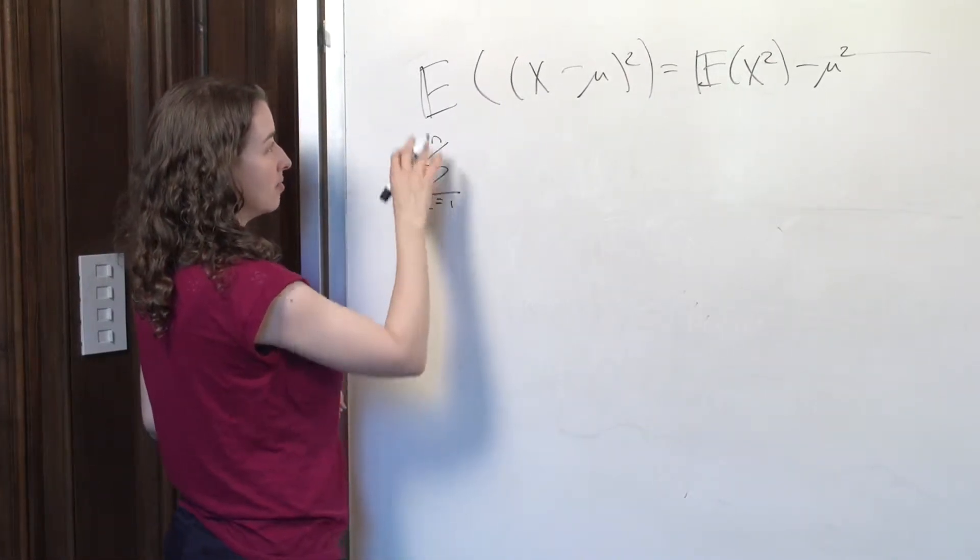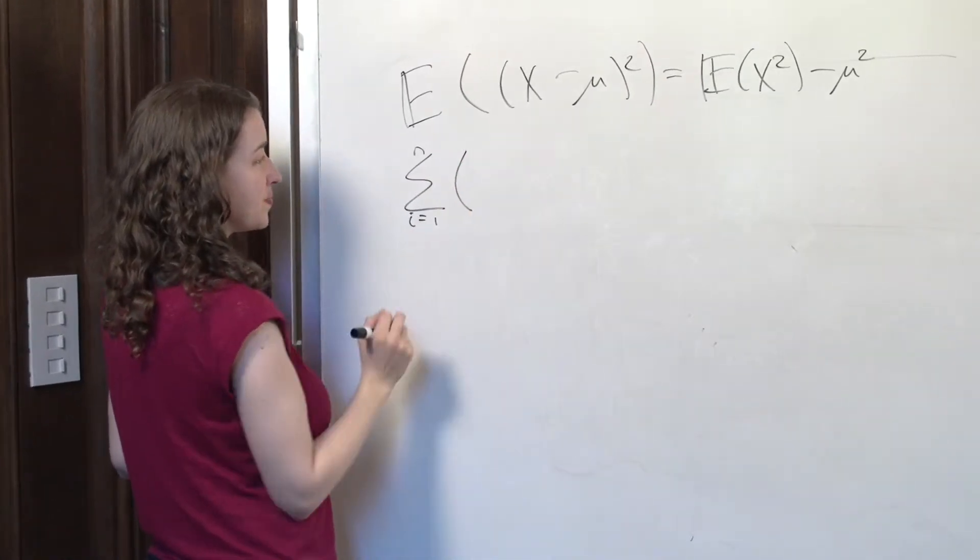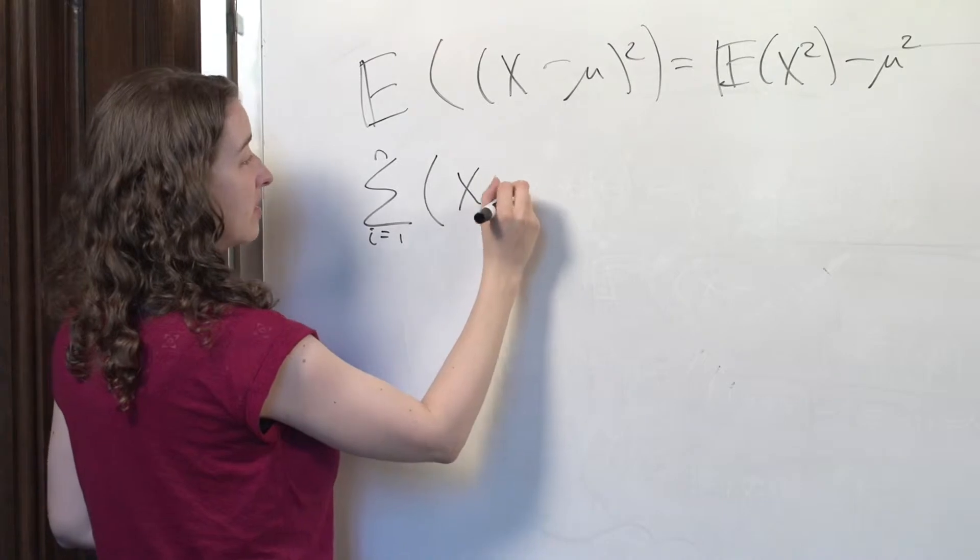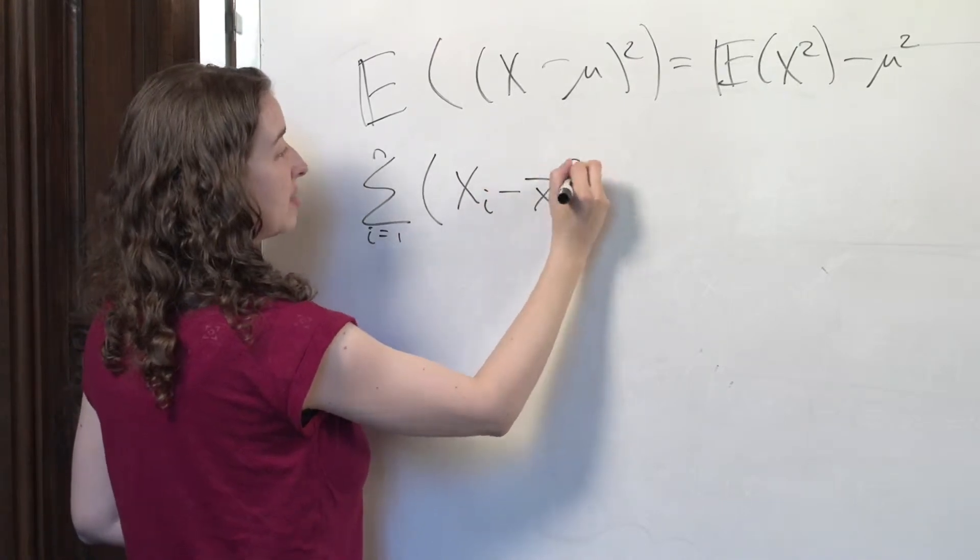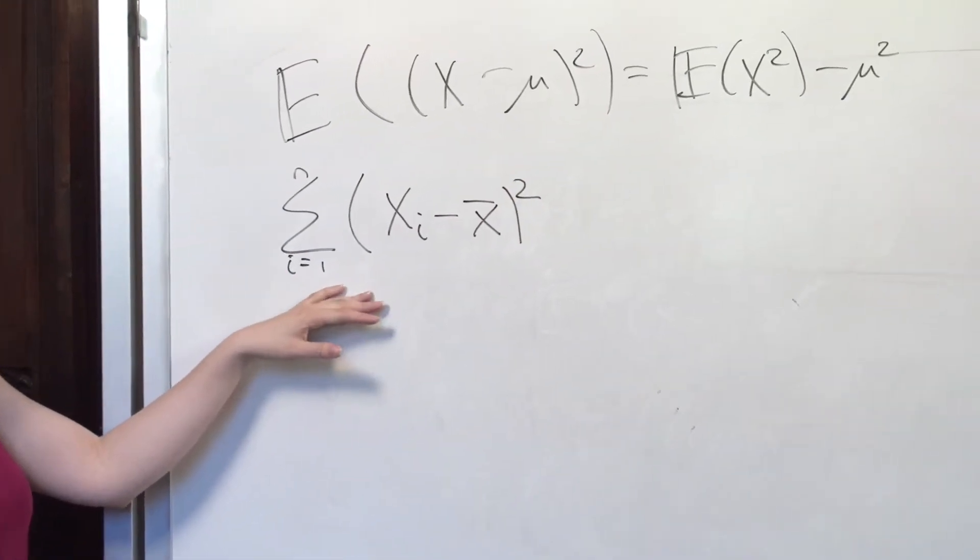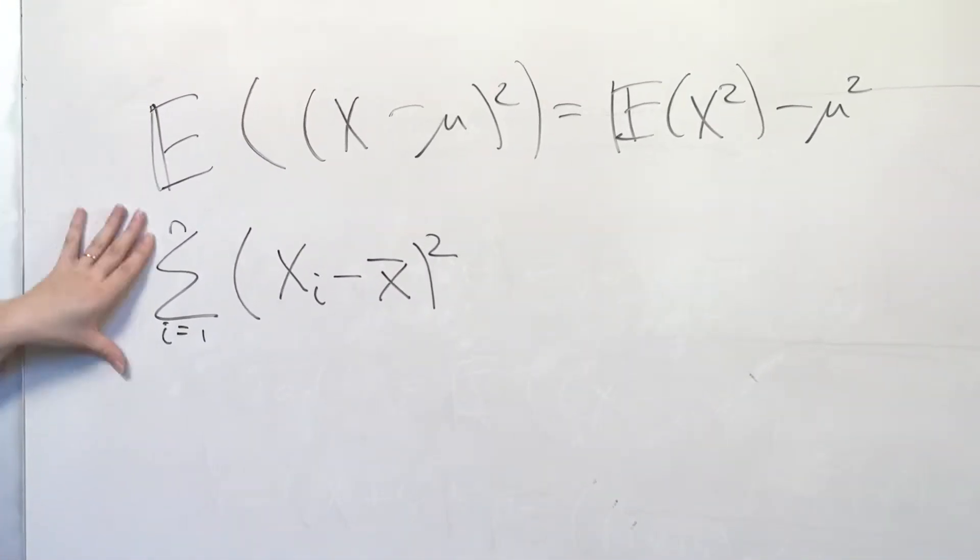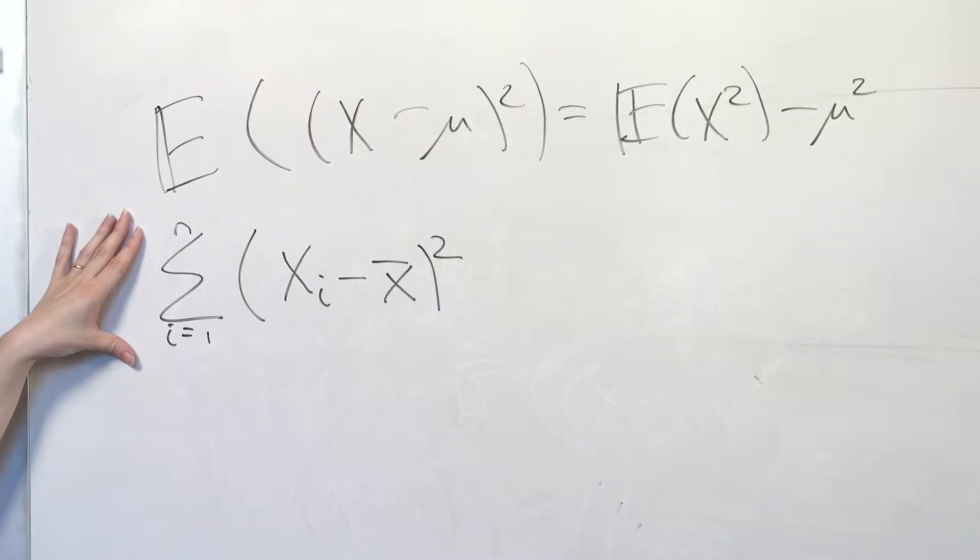Suppose I'm interested in the sum over a whole bunch of values in a sample of the sample values minus the sample mean squared. And this should look familiar. This is the numerator of s squared. So here, this is the expectation. This is actually the variance. This is the numerator of the estimate of the variance.